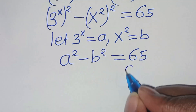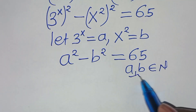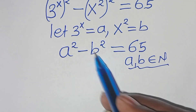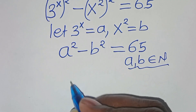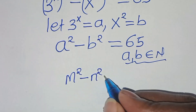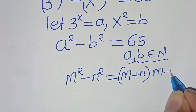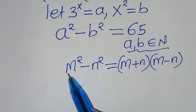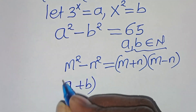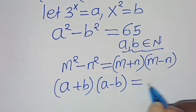So that here, a and b are members of natural numbers. From here, a squared minus b squared is in the form of m squared minus n squared, which we can express as m plus n, times m minus n. Applying this property, then this means we have a plus b, times a minus b, this is equal to 65.